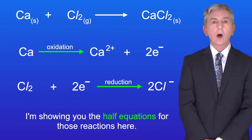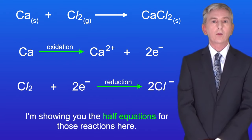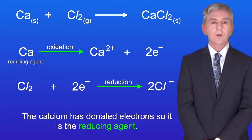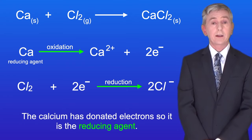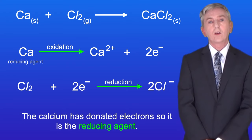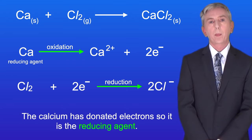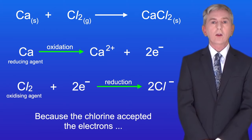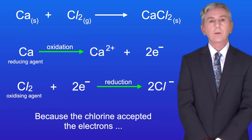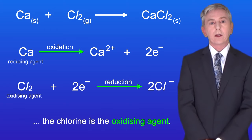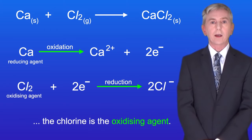I'm showing you the half equations for those reactions here. The calcium has donated electrons, so it is the reducing agent. And because the chlorine accepted the electrons, the chlorine is the oxidizing agent.